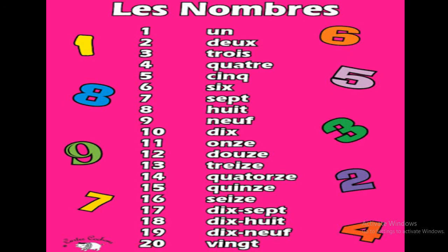Zero in French is zero. One is un, two is deux, three is trois, four is cathars, five is sang, six is see, seven is set, eight is youth, nine is naf, ten is dix.